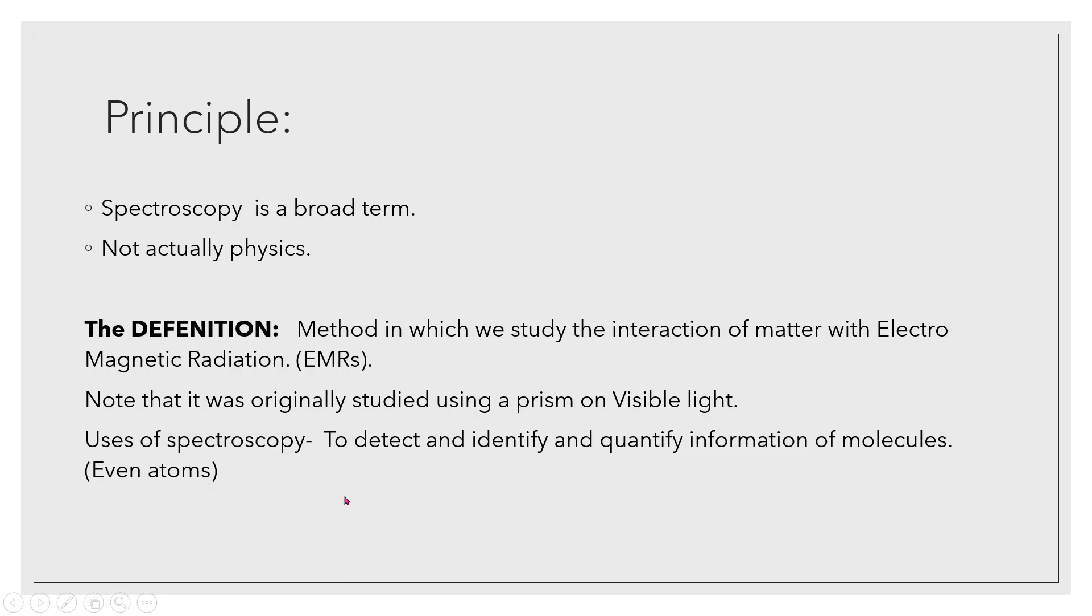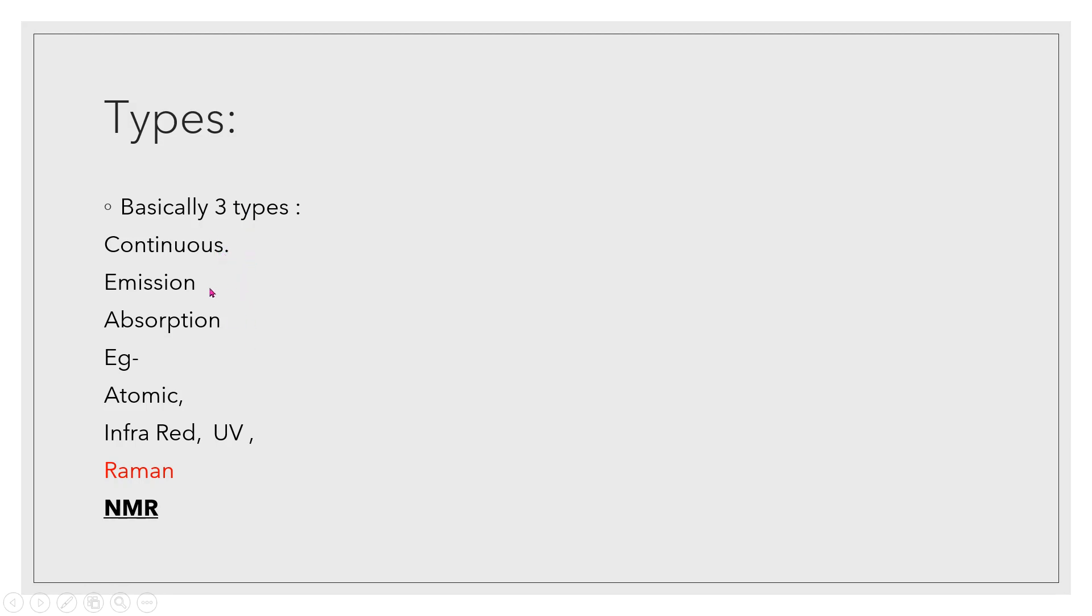The uses of spectroscopy - it is used everywhere to detect, identify, and quantify the information of various molecules. In some types of spectroscopy you can even identify atoms. Basically spectroscopy has three parts: continuous, emission, and absorption. Continuous spectroscopy, one example is UV spectroscopy. Emission spectroscopy differs from continuous spectroscopy in that it will have some spaces between the different spectrums. Absorption spectroscopy is in general terms the inverted image of emission. Examples of different kinds of spectroscopy are atomic, infrared, UV, and of course Raman - Raman spectroscopy is named after our famous Nobel laureate physicist C.V. Raman - and then the star of the show, NMR, nuclear magnetic resonance spectroscopy.